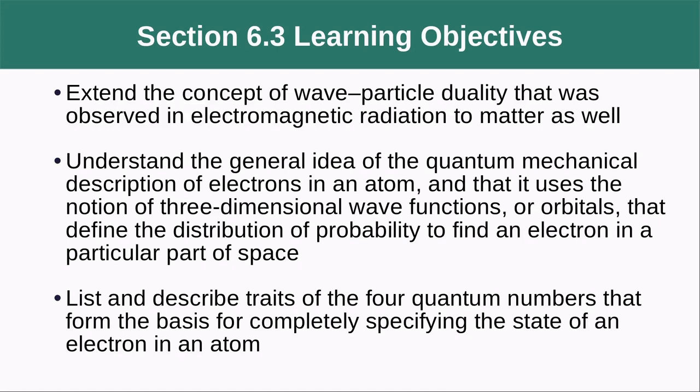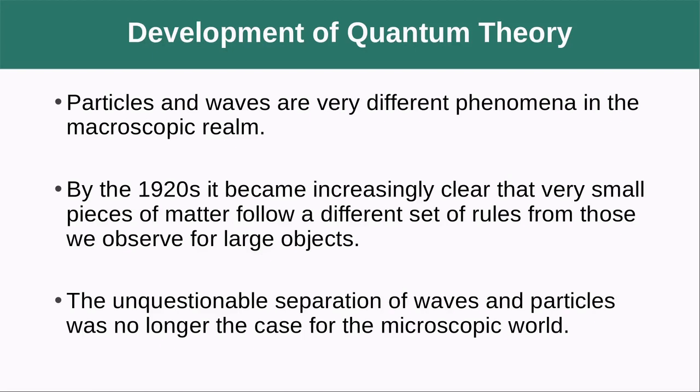In the development of quantum theory, particles and waves are very different phenomena in the macroscopic realm. By the 1920s, it became increasingly clear that very small pieces of matter follow a different set of rules from those we observe for large objects.